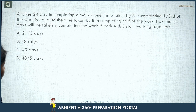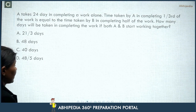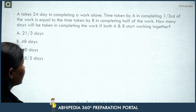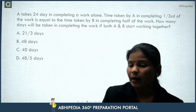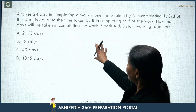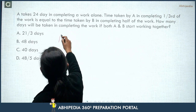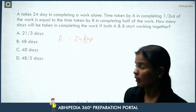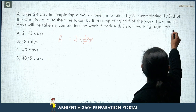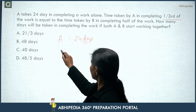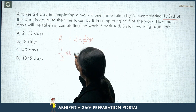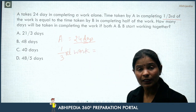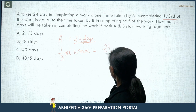Next question: A takes 24 days to complete a work alone. The time taken by A to complete one third of the work equals the time taken by B to complete half of the work. How many days will it take to complete the work if both A and B start together? Let total work = 24 units. A completes 1/3 of the work in 24/3 = 8 days.